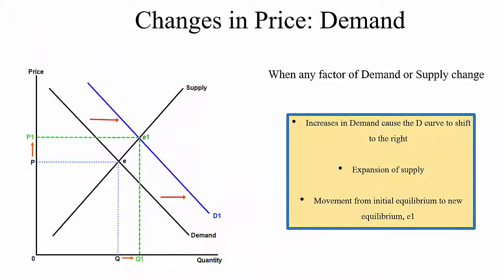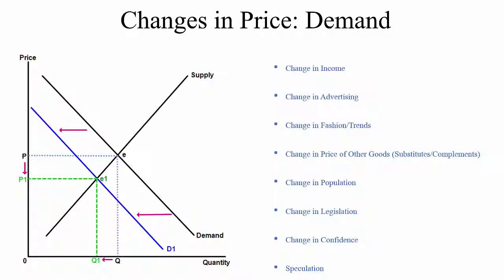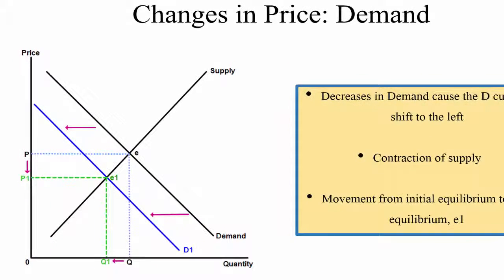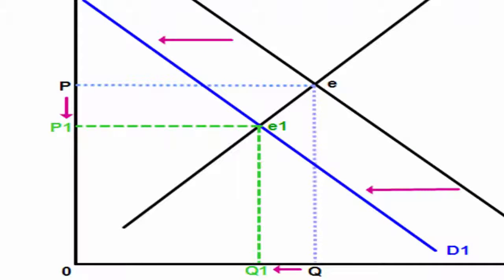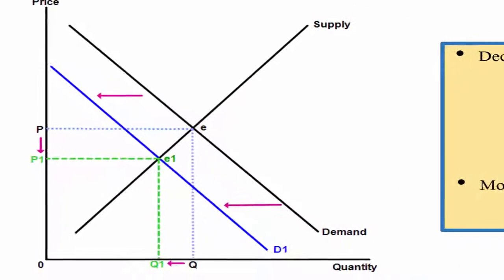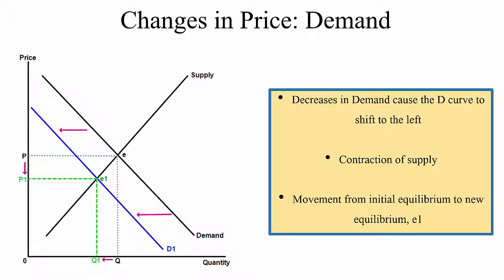The converse is true if any of the factors of demand reduce. If population decreases, fewer people are around to purchase goods and services — say the demand for apples falls. We move from the original equilibrium E at P and Q, but this time because demand has shifted to the left, supply will contract. We move along the supply curve from E to E1, representing a contraction, arriving at a new equilibrium at E1, P1, and Q1. Lower demand reduces the price; fewer suppliers are willing to supply because profits are lower, disincentivizing supply, and we move down the supply curve to a new equilibrium price at E1.